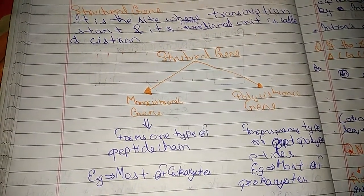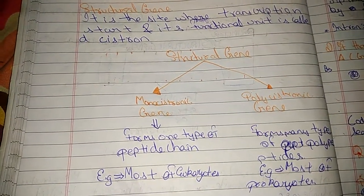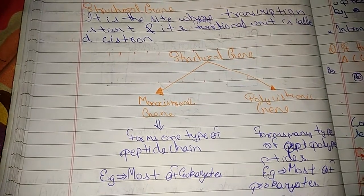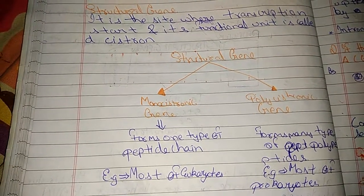Today we are going to study about the structural gene and the split gene. Structural gene is a site where the transcription starts and functional unit called cistron.